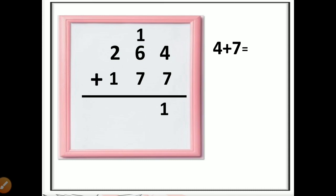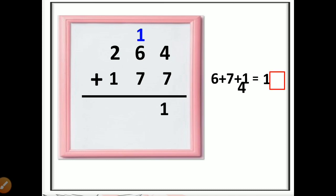Now we do the addition in the tens place. The numbers in the tens place are 6, 7, and 1 carry. Six plus seven plus one equals 14. In 14, 4 comes to the tens position and 1 is carry-forwarded to the hundreds position.